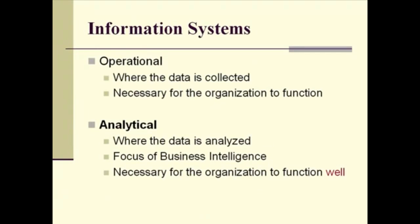Information systems for an organization can be divided into two major categories. First, operational systems — those systems where data is collected, the systems that the organization needs to function, such as basic accounting systems and basic inventory systems. Second, analytical systems, which is where we're focusing in this course, where data is analyzed — the focus of business intelligence.